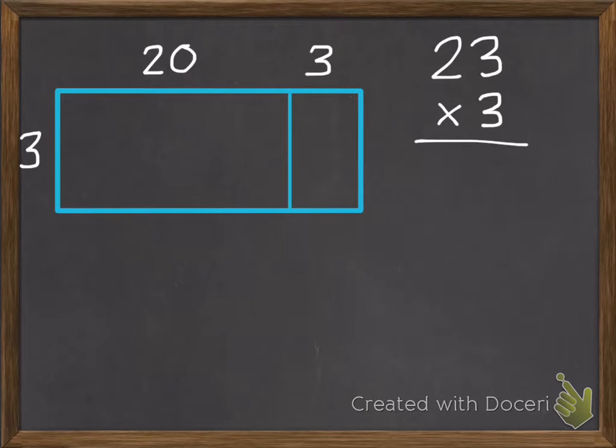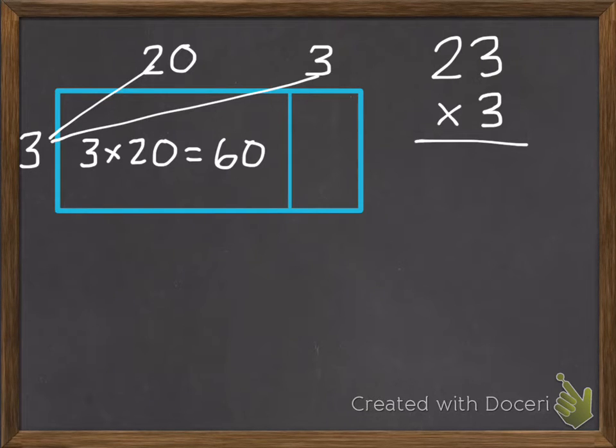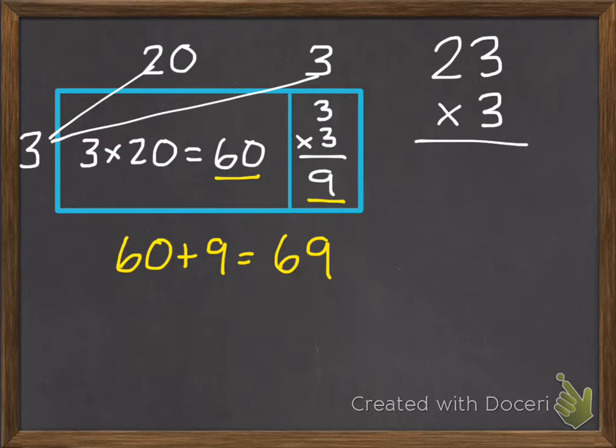So we broke apart the 23 into 20 and 3, and then we were able to find each section of this model. So we had 3 times 20, which equals 60, and then we had 3 times 3, which equals 9. Then we added those two parts together, 60 plus 9, which equals 69.